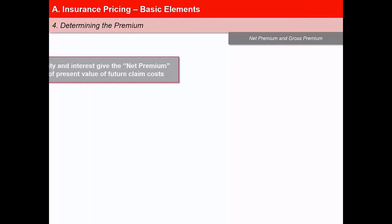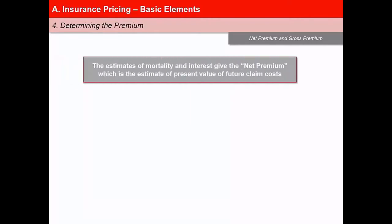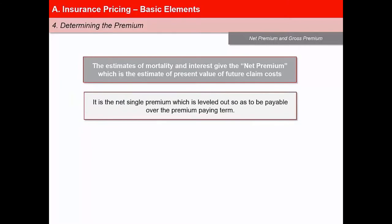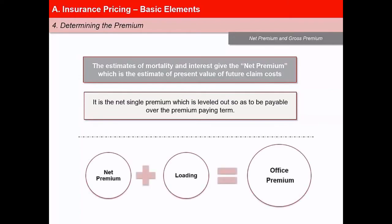The estimates of mortality and interest give the net premium, which is the estimate of present value of future claim costs. The discounted present value of all future claim liabilities gives the net single premium. It is the net single premium which is spread out so as to be payable over the premium paying term. Office premium is the addition of net premium and an amount called loading.